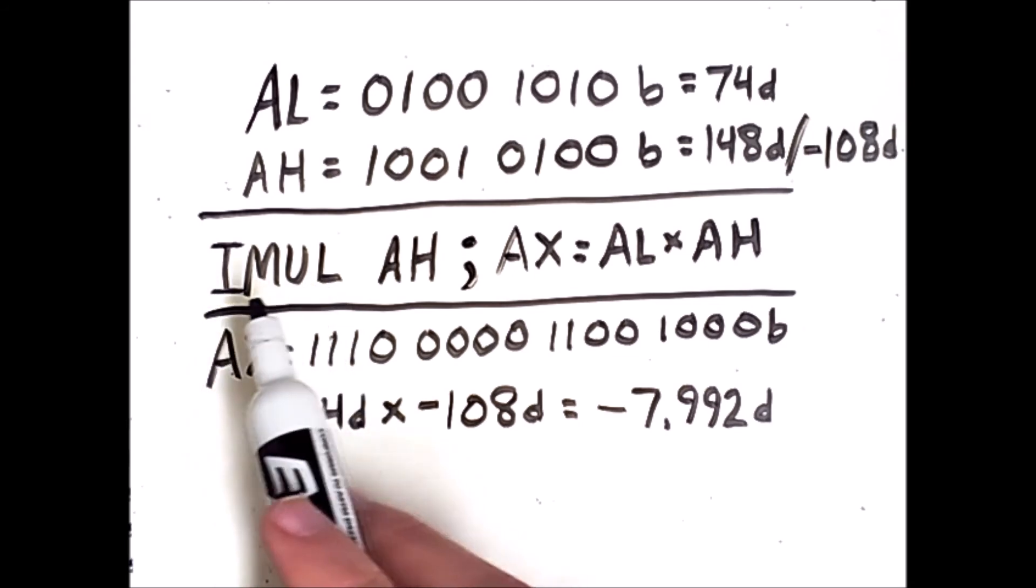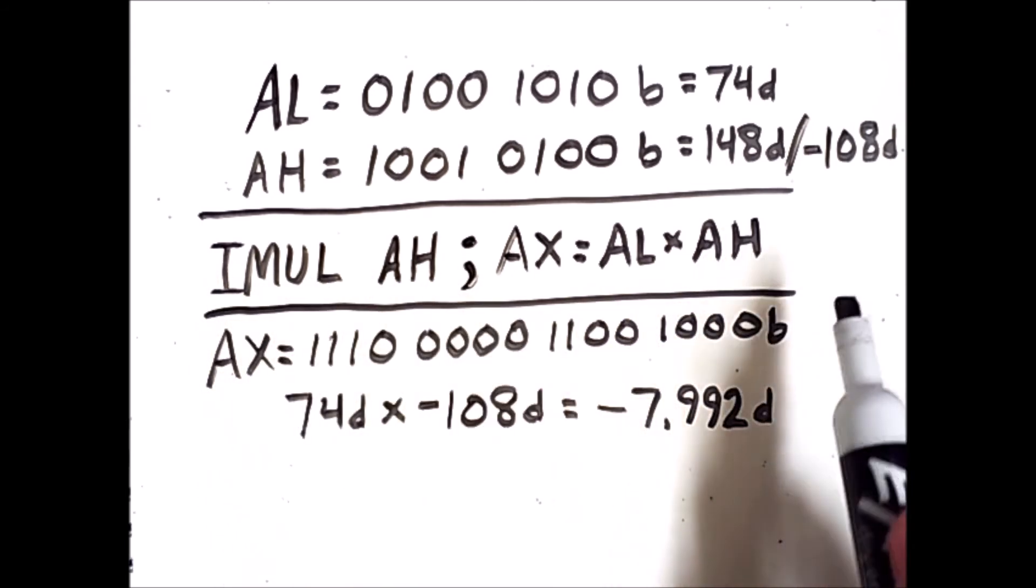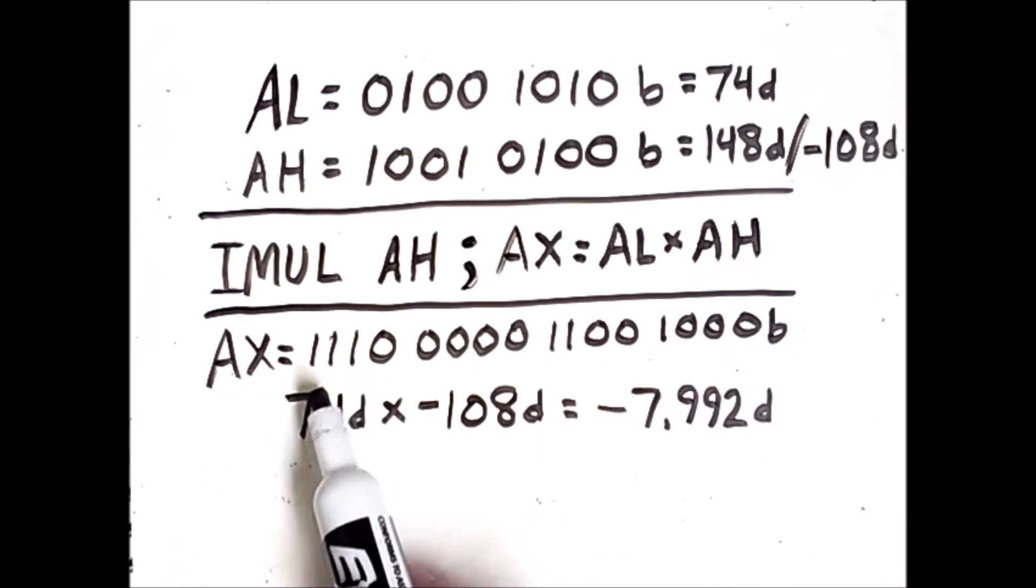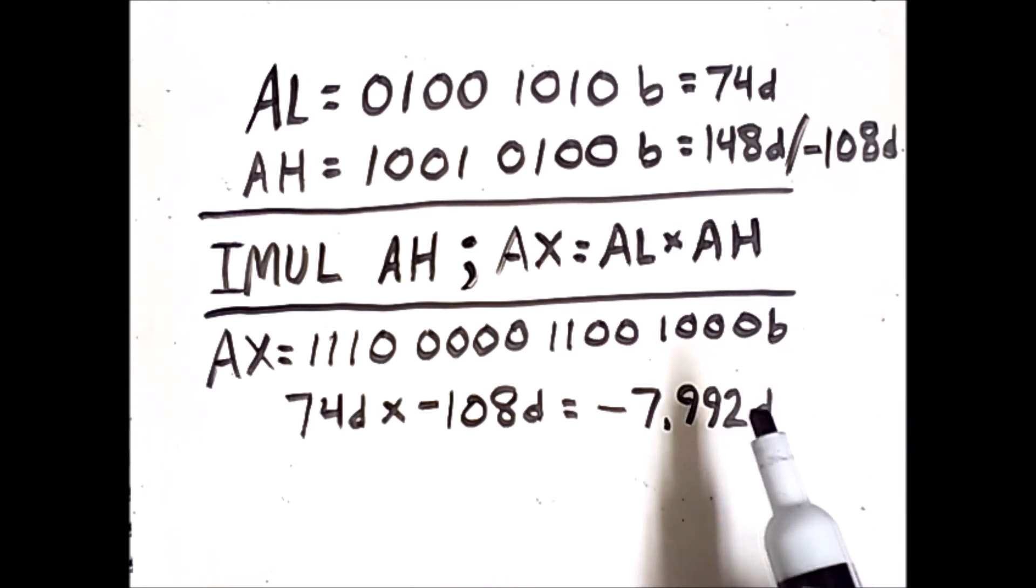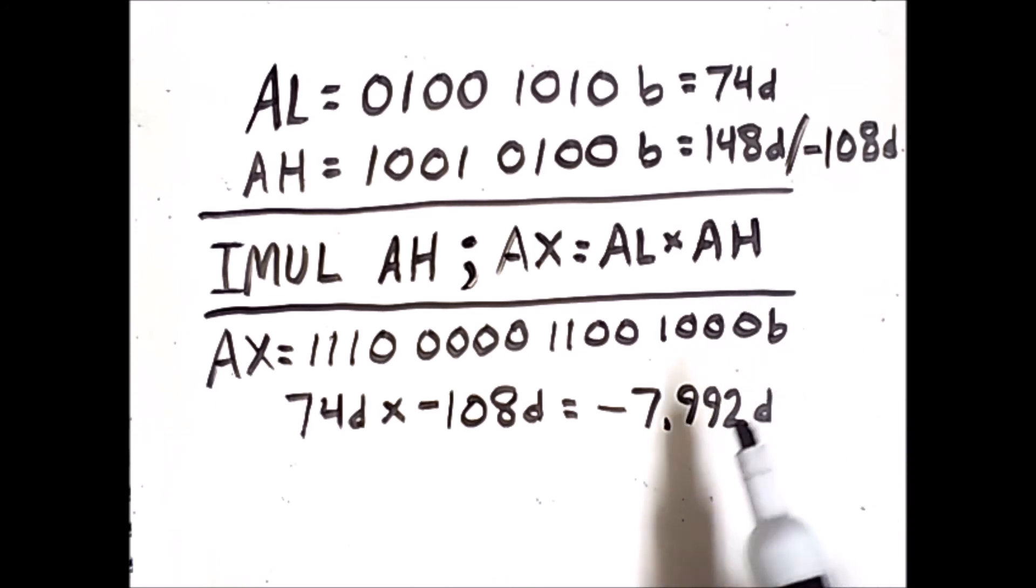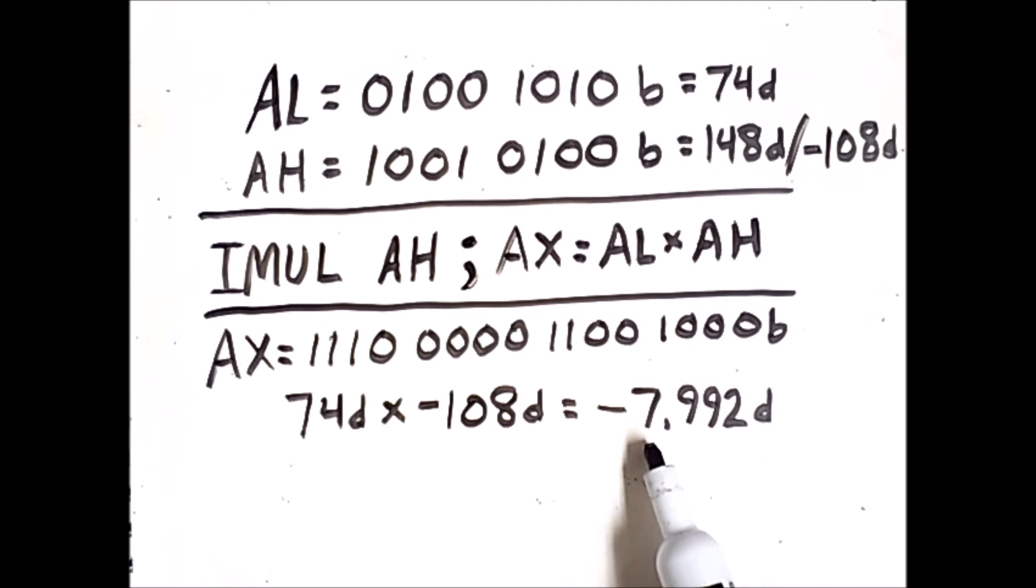And if I do this, the result that ends up in AX will instead be this sequence of bits, which you can confirm on your own, are equivalent to negative 7,992 if we interpret this as a two's complement integer. So this is the correct result for multiplying 74 in decimal by negative 108 in decimal.